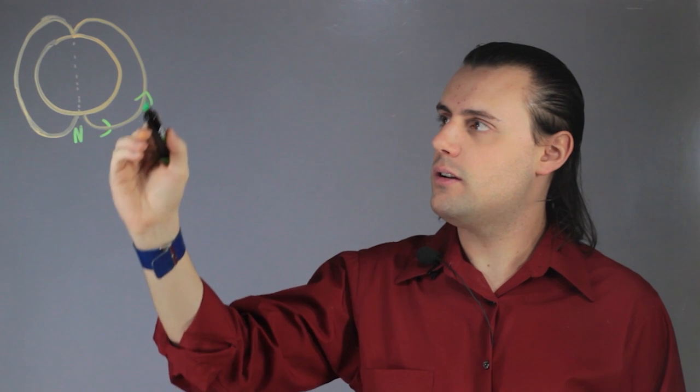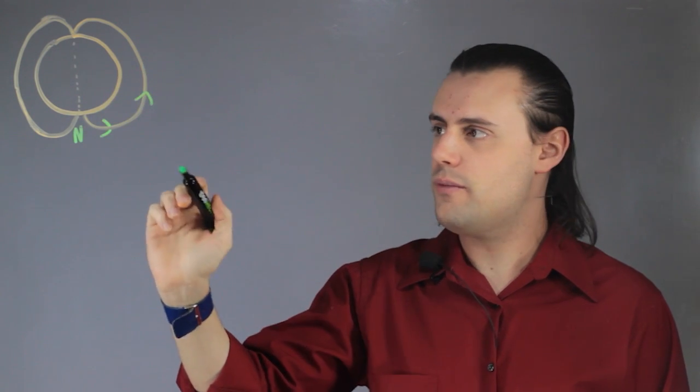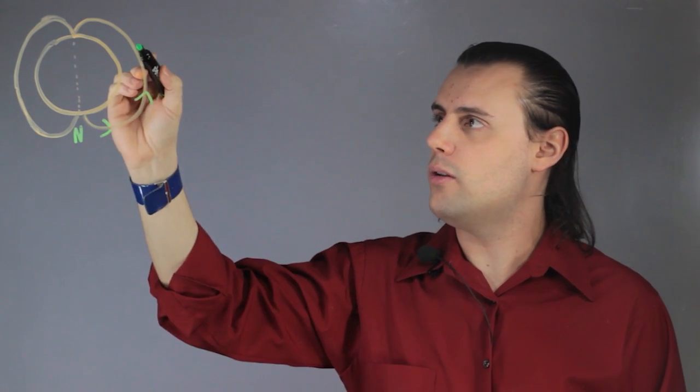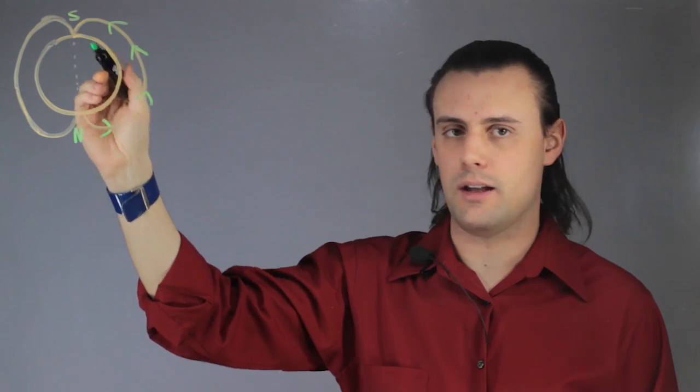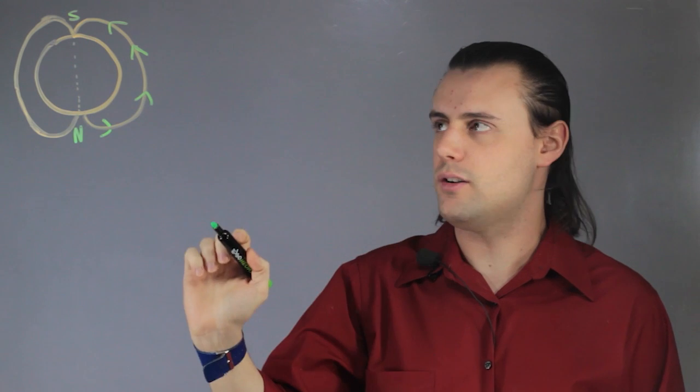And the magnetic field that is external to the Earth flows from the north pole, conventionally, to the south magnetic pole, which is located in geographic north.